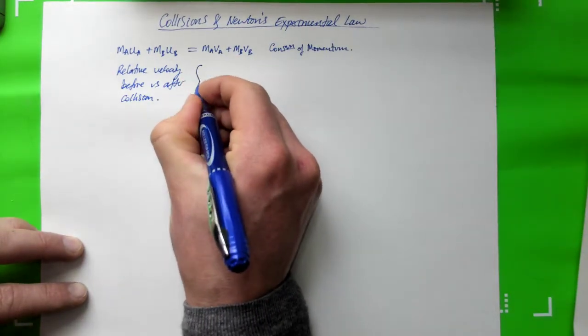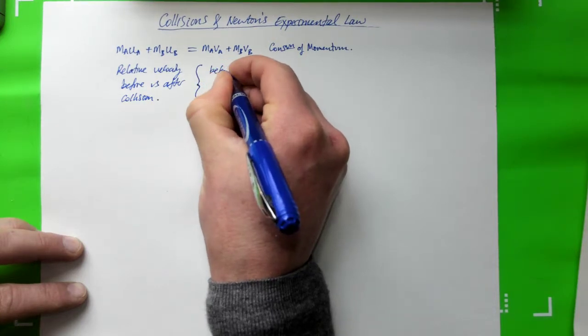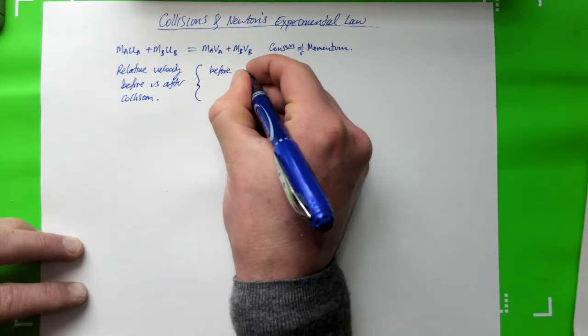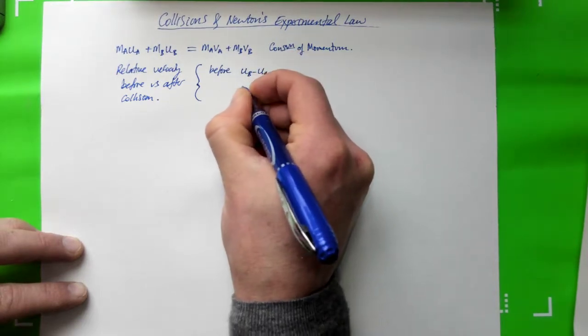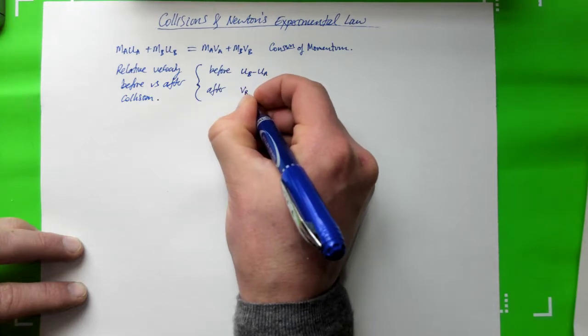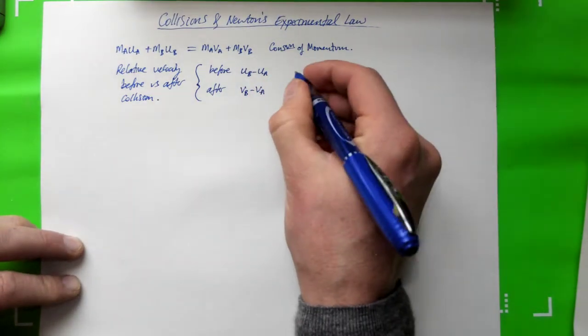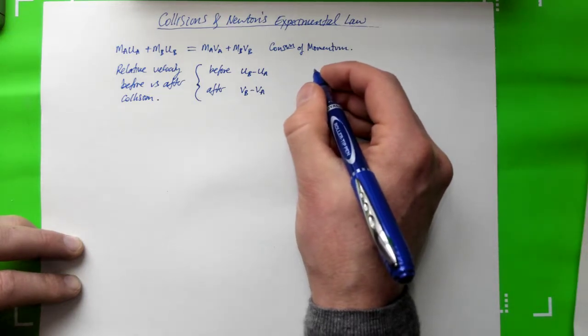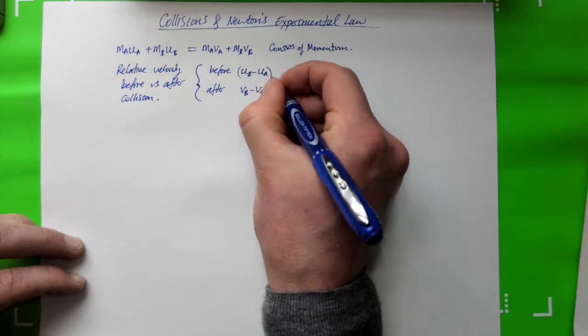So here it is. This is the one that you can use. Before, the relative velocity is UB minus UA and after it is VB minus VA. So we could define some new term that is equal to the ratio of these two quantities.